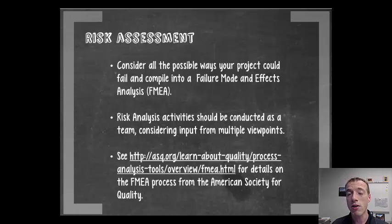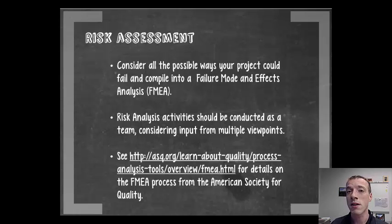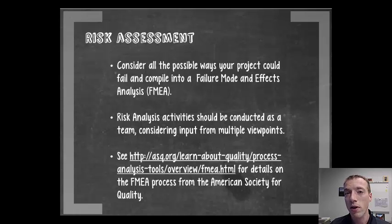I recommend you start doing risk assessment around the specification development phase. As soon as you've gotten through project identification and really understand the problem you're going to solve, you'll start to see some of the risks associated with the possible solutions. You can try to address those early on and design them away, so by the time you get to this point they're already accounted for. But if you haven't done that, you have to do it by this point in the project.